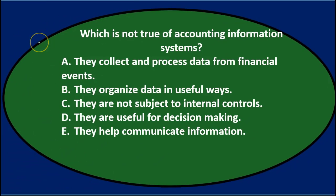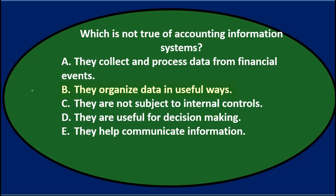First question: Which is not true of accounting information systems? A. They collect and process data from financial events. B. They organize data in useful ways. C. They are not subject to internal controls. D. They are useful for decision making. E. They help communicate information.